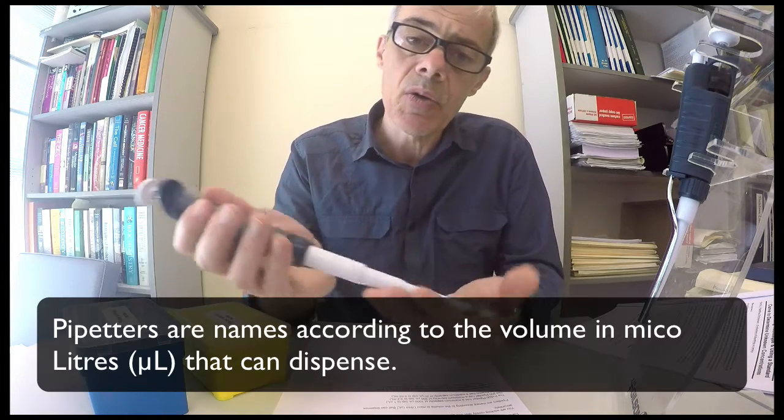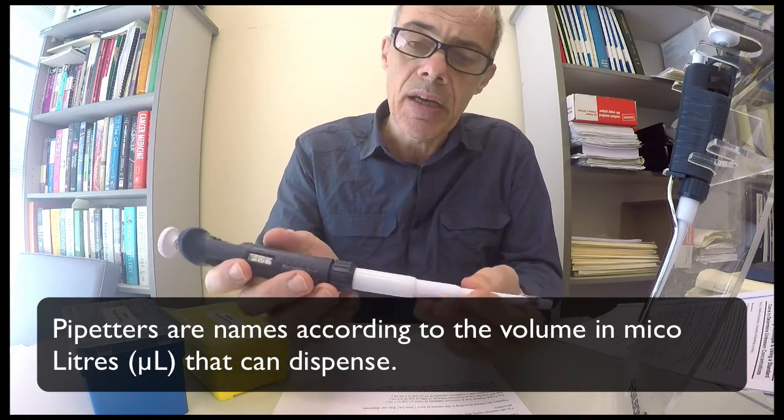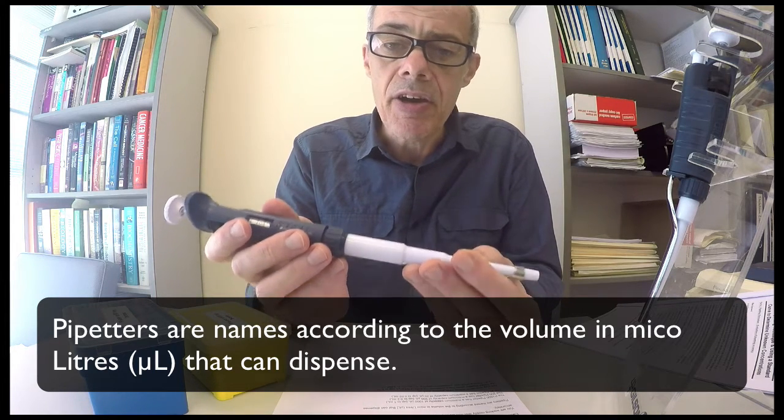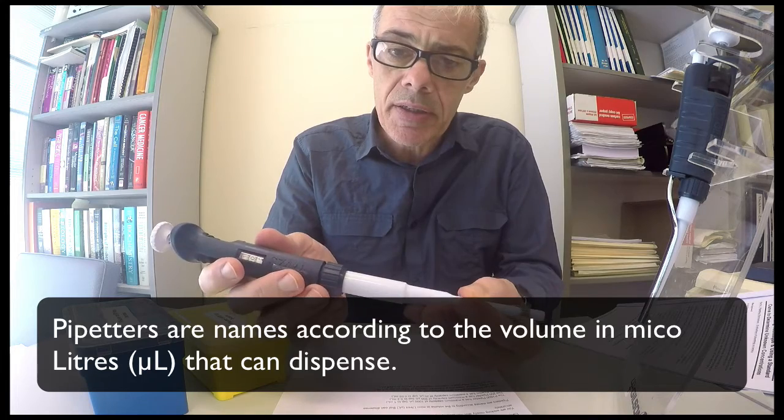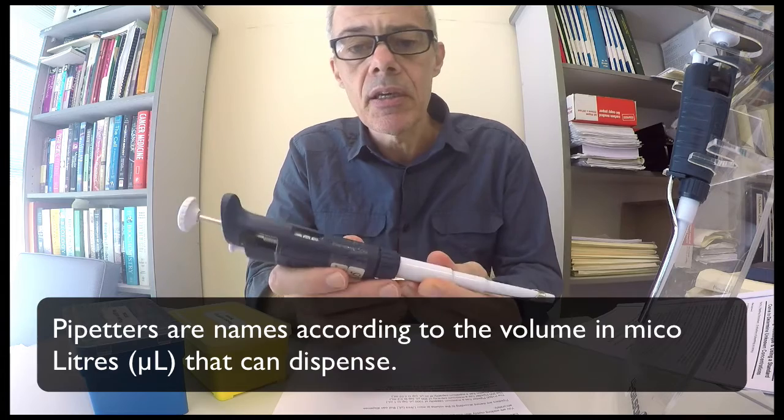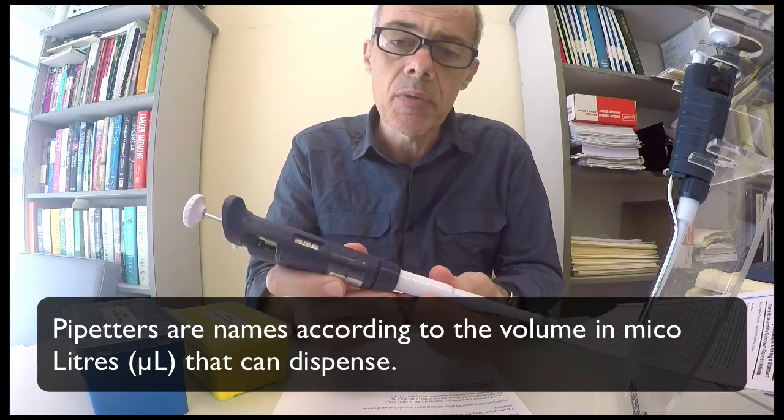So the P1000 can dispense 1000 units of something. That's 1000 microlitres. There are 1000 microlitres in one millilitre, therefore the maximum volume this can dispense is one millilitre.